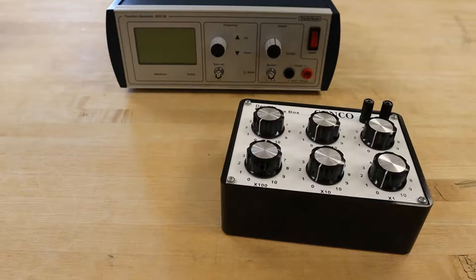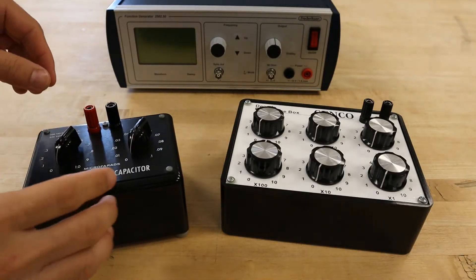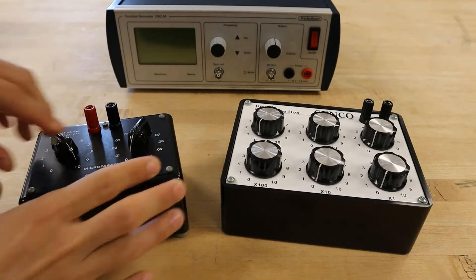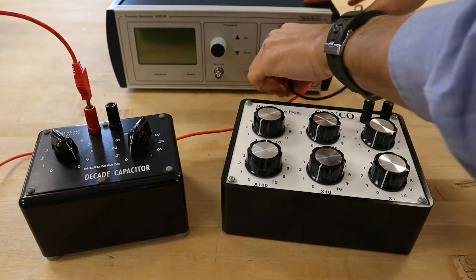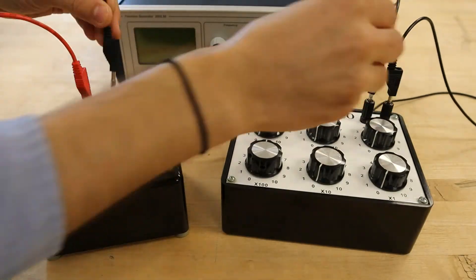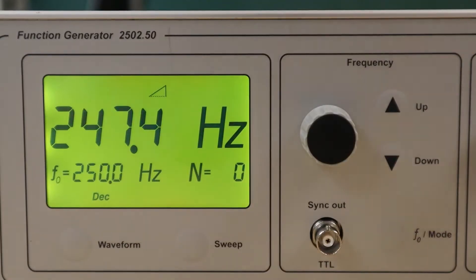Next we'll set our decade capacitor to 1 microfarad, and construct our circuit with the resistor and capacitor wired to the function generator. The function generator should be set to a sine wave with a frequency of 250 Hz.